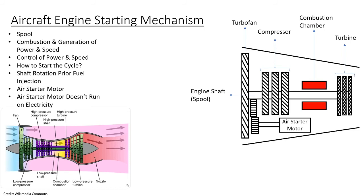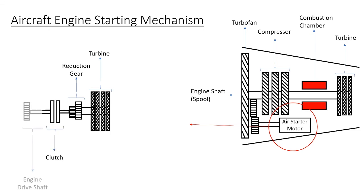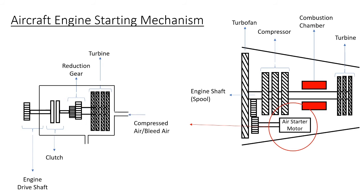The problem is the air starter motor doesn't run on electricity. If we look at the design of an air starter motor, we find it has a turbine, a gearing mechanism, a clutch, and a jet engine drive shaft. It works when compressed air or bleed air is received at its input. This air passes through the turbine and leaves as low pressure air. The turbine extracts energy from the pressurized air and makes the engine drive shaft rotate, which is coupled to the spool via a gearbox to start the engine. Once the engine has gained enough speed to sustain itself through combustion, ASU is disconnected and pilots take control of the throttle.